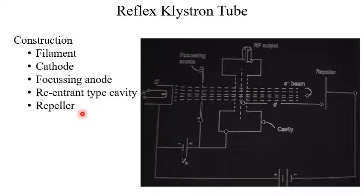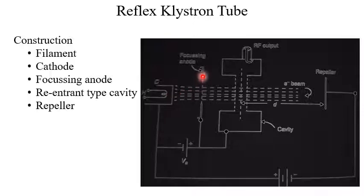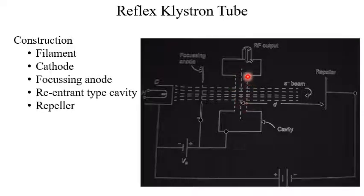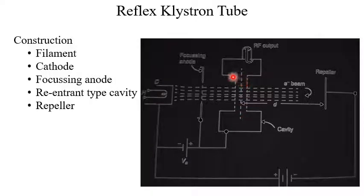The reflex klystron consists of a filament, cathode, focusing anode, reentrant type cavity, and a repeller. The filament is very close to the cathode so it can heat it up. Then we have the focusing anode arrangement. Next, we have the reentrant type cavity, which consists of an actual metallic enclosure along with a wire mesh so that electrons can pass through. This is a cylindrical structure and we are observing its cross section. At the center part we have the wire mesh.